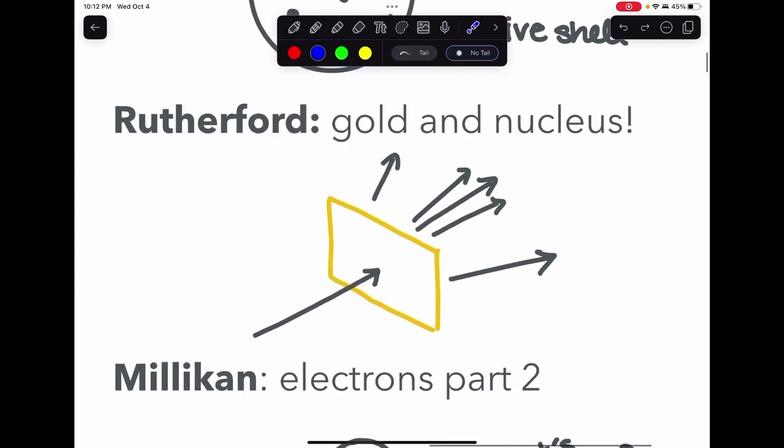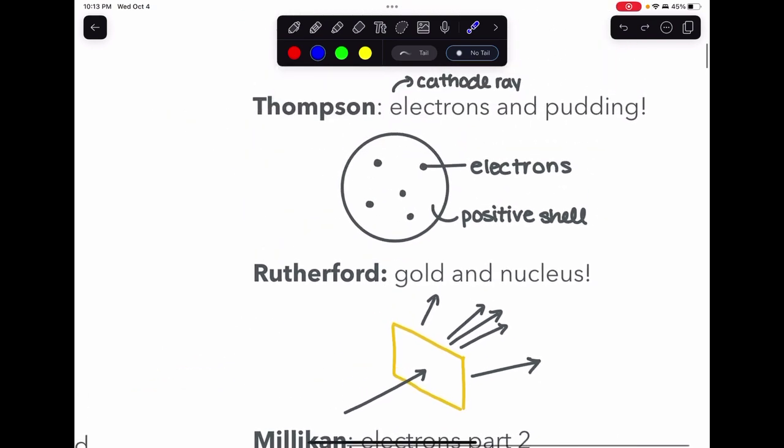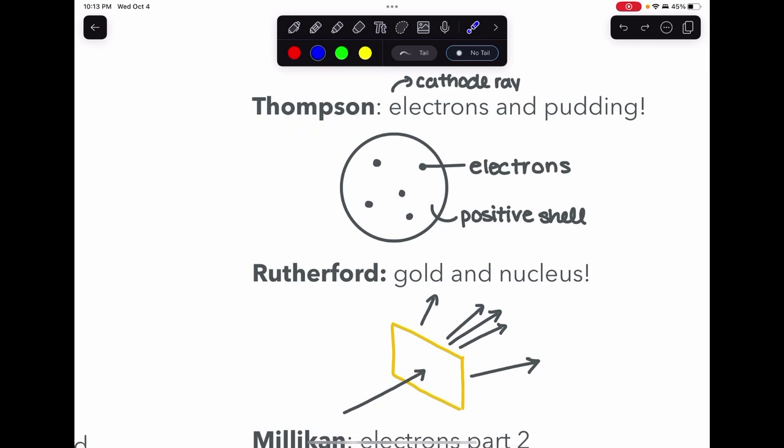Now Rutherford, he had his gold foil experiment and he discovered the existence of a positively charged nucleus. His experiment was he shot alpha particles at gold foil and only a few particles were deflected, showing that there is a dense center in the atom because so many particles actually passed through the gold foil and only a few were deflected. So that showed that there's a positively charged nucleus with electrons moving around it and he built that upon Thompson's discovery.